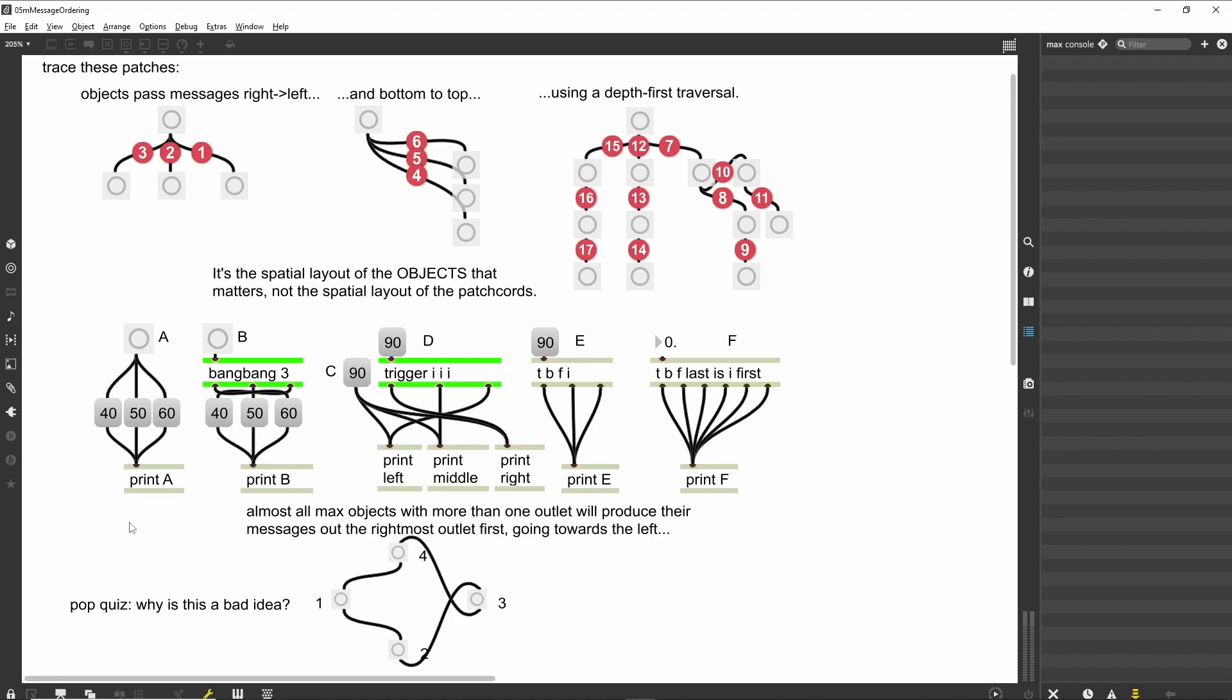More Message Ordering. Sometimes it is inconvenient to match the spatial order of the patch with our desired result. In the bottom row of patches, the leftmost patch is well-structured, it is cleanly laid out, and has the number messages in ascending numerical order from left to right. If we wanted the messages to happen from low to high, it is also wrong. When we click the top button, we see the numbers come out in reverse order in the Max console. This is because the message boxes are receiving bang messages in right-to-left order.